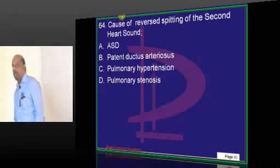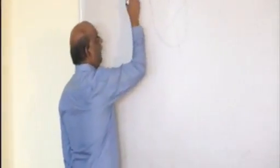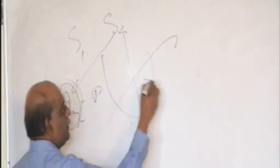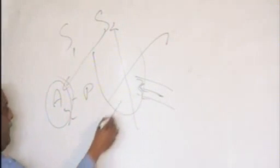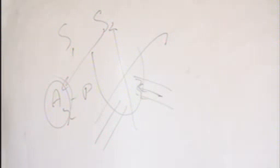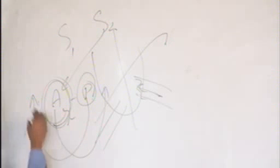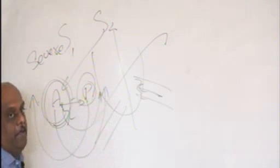Regarding reverse splitting of the second heart sound: between S1 and S2, within S2 you have A2 and P2. A2 closes first because the left ventricle operates at very high pressure, so closure of the aortic valve is earlier than the pulmonic valve. Anything that makes the pulmonic valve close before the aortic valve, or makes aortic valve closure significantly delayed after the pulmonic valve, will lead to reverse splitting where P2 comes before A2. In severe aortic stenosis, A2 comes so close to P2 that it comes after P2, causing reversal.